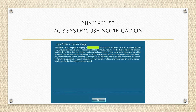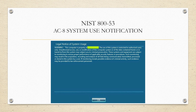Now let's look at an example of a real system use notification. It reads: 'This computer is the property of [blank]. Use of this system is restricted to authorized users. Unauthorized access, use, or modification of this system or the data contained herein may be subject to criminal prosecution. These systems and equipment are subject to monitoring. Such monitoring may result in the acquisition, recording, or analysis of all data being communicated. If monitoring reveals possible evidence of criminal activity, it may be provided to law enforcement.' That hits every point on the checklist: owned by ABC Corp, authorized users only, unauthorized use is subject to criminal prosecution, subject to monitoring and recording.